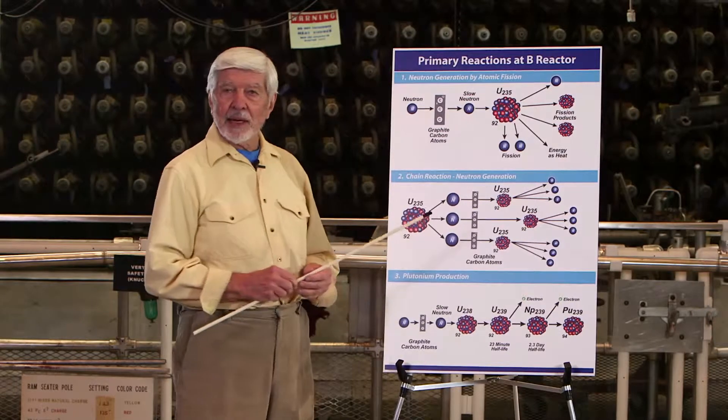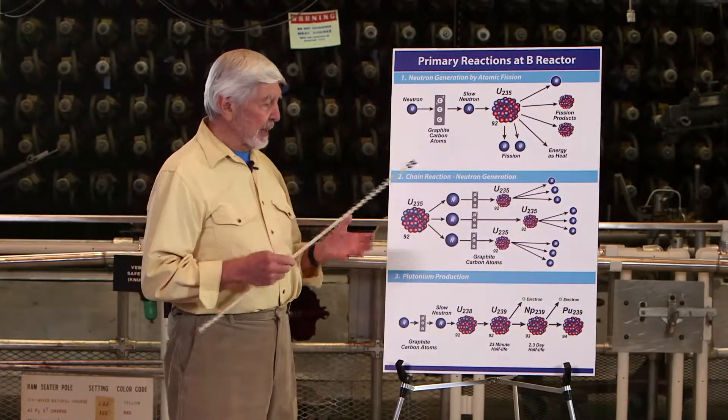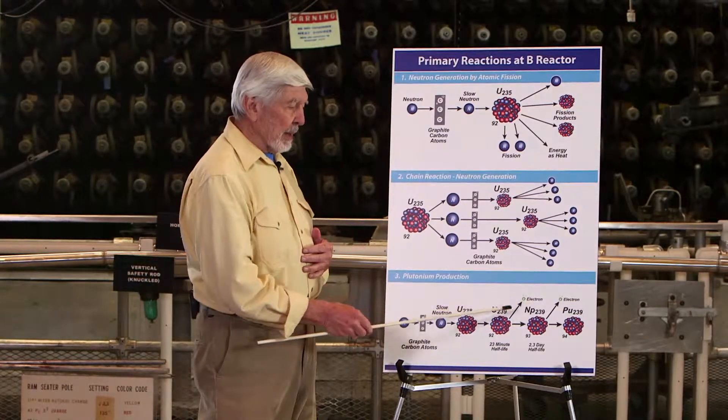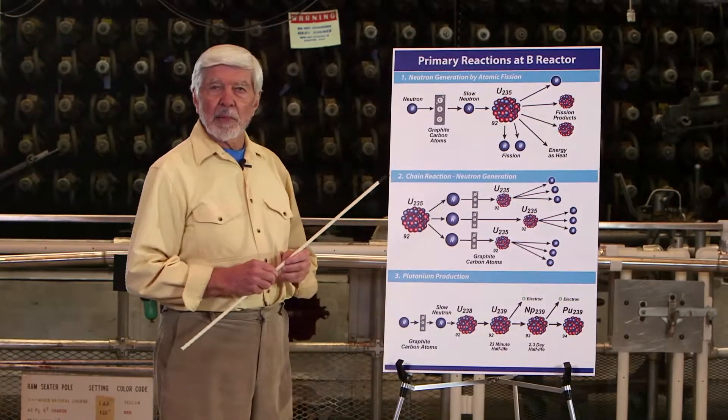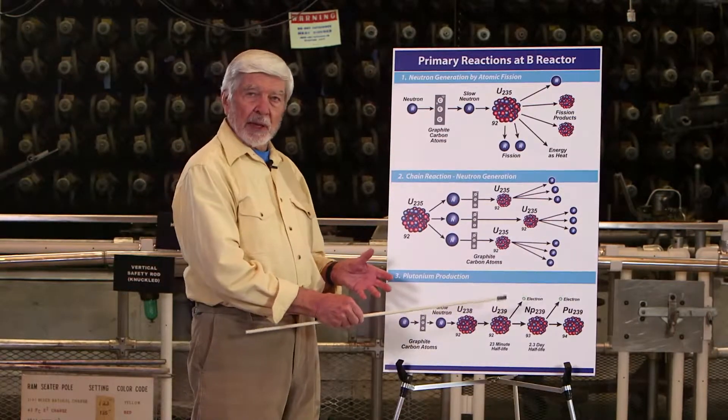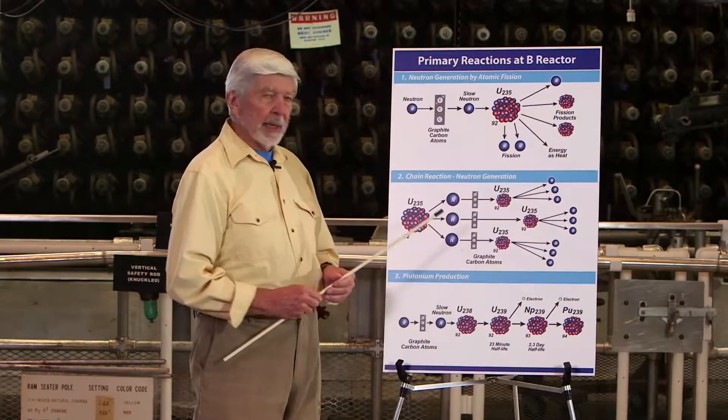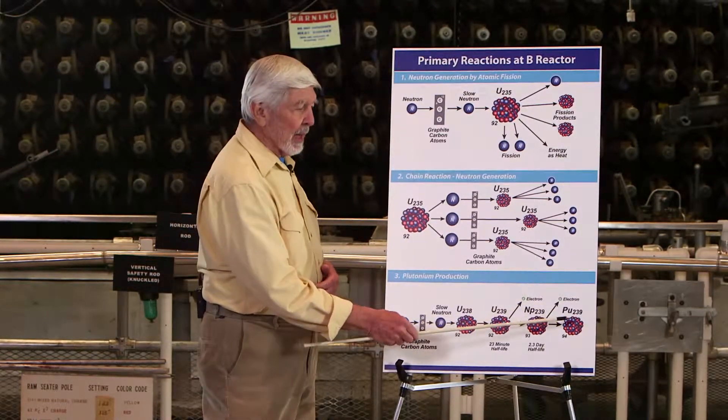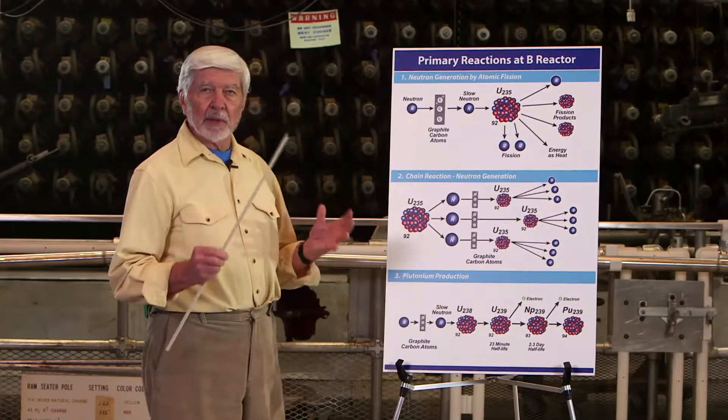Uranium-239 is not a stable isotope. In its attempt to become stable, it kicks out an electron and changes itself into a brand new man-made atom called neptunium. Neptunium is also unstable and kicks out an electron, transmutating itself into plutonium-239, which is what we're after in the first place.